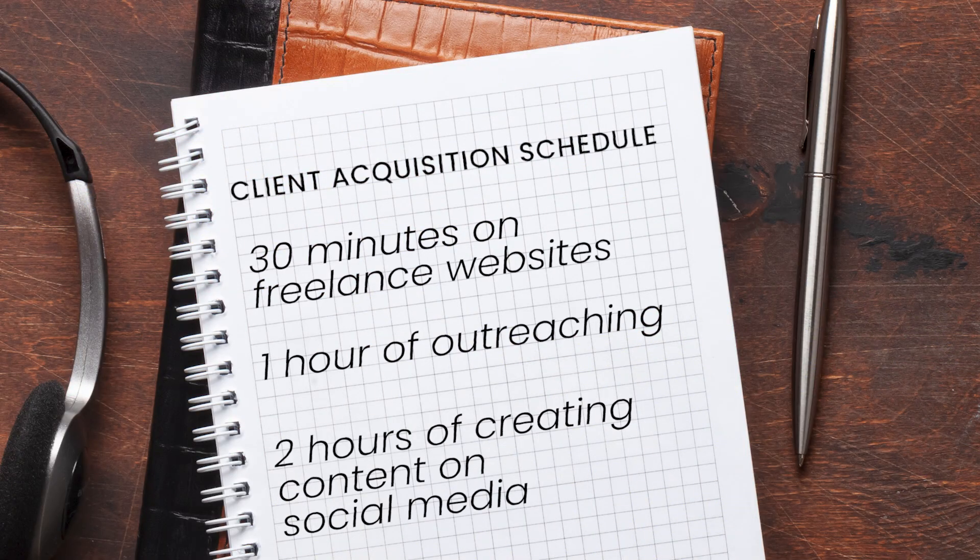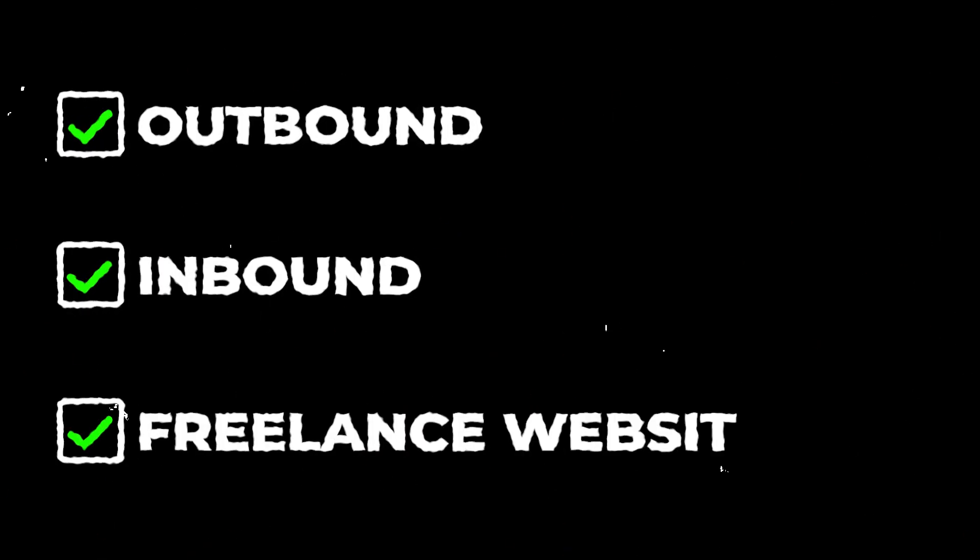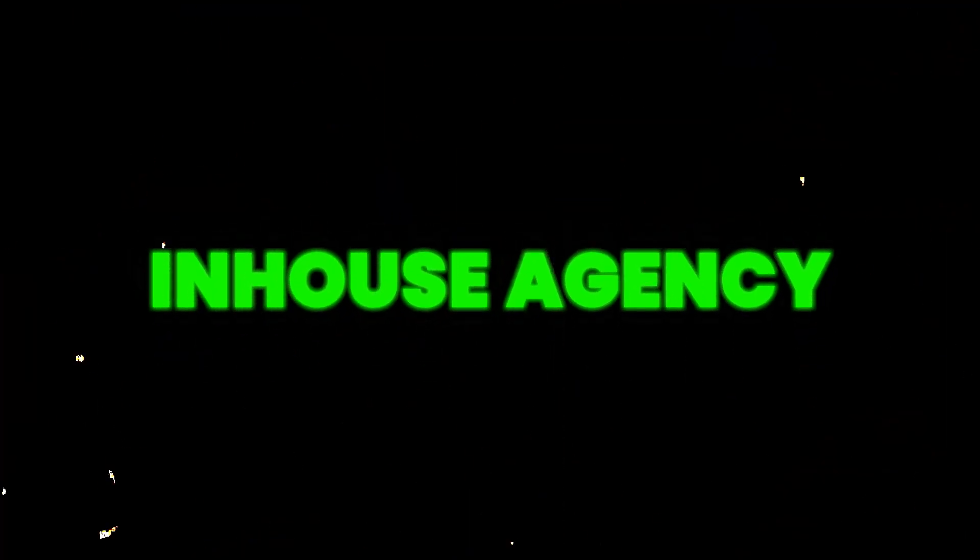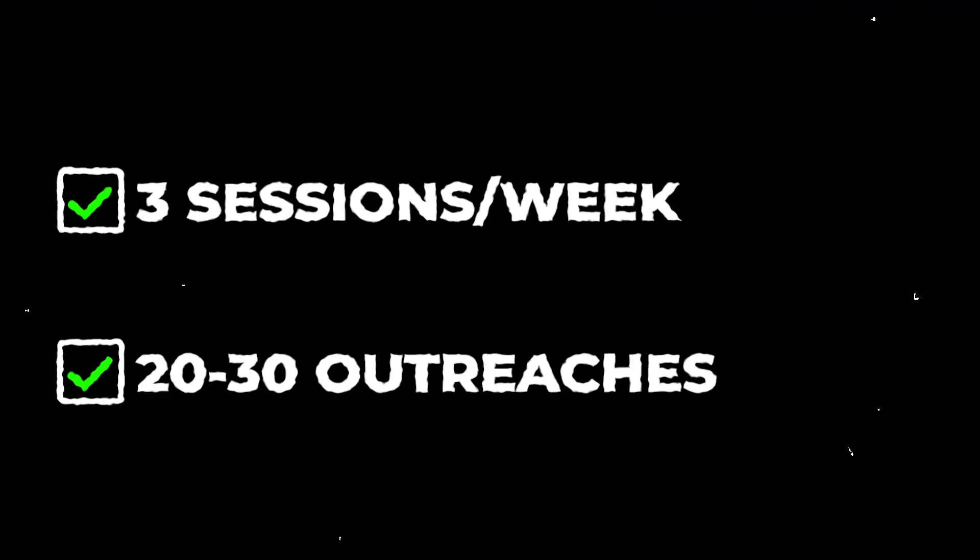The third point of the marketing strategy is two hours a day of creating content on social media — mass engagement and outreach. This means creating content that positions you as an expert to attract clients to you. These are loose estimates; it's completely up to you where you spend more time. Some people have a lot of success on freelance websites and spend most of their time there. For me, this looks like three sessions a week of highly personalized Loom videos — 20 to 30 outreaches at a time, automated with a virtual assistant.